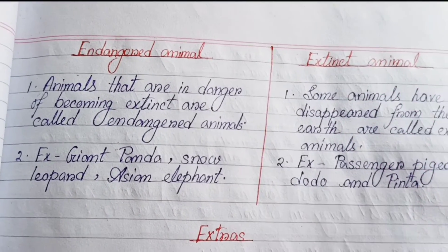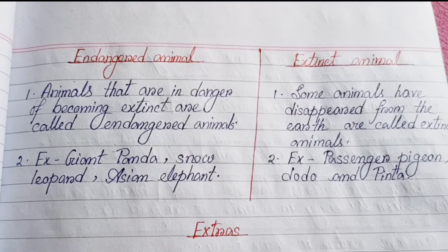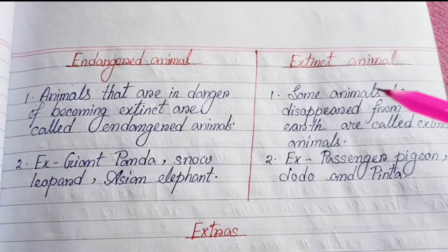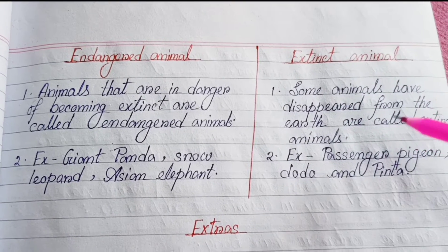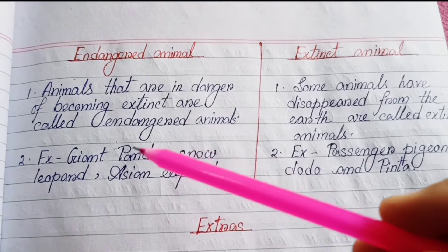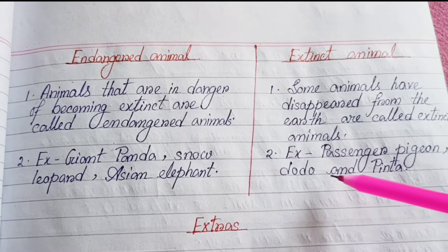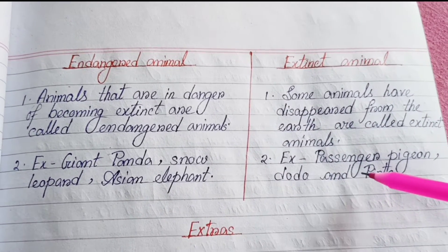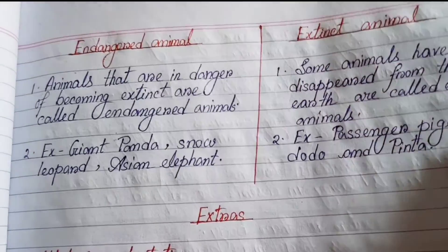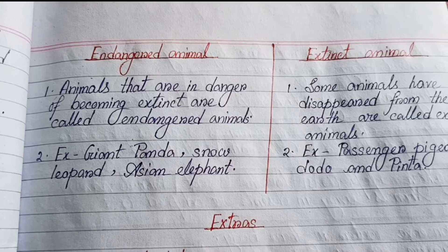Number eight — Differentiate between endangered and extinct animals; give three examples of each. Endangered animals: animals that are in danger of becoming extinct are called endangered animals; examples are giant panda, snow leopard, and Asian elephant. Extinct animals: animals that have disappeared from the earth are called extinct animals; examples are passenger pigeon, dodo, and Pinta Island tortoise.